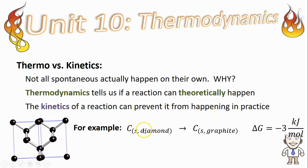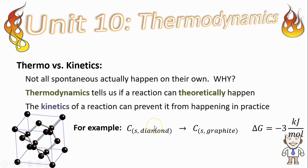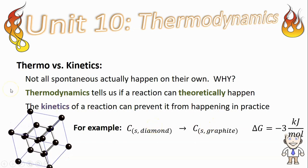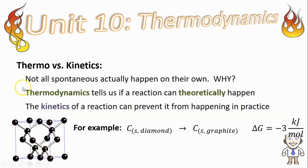If it did, all the diamonds in the world would have already converted into graphite and we probably wouldn't have any diamonds at all. So there must be something going on here that stops this spontaneous reaction from actually happening in real life.